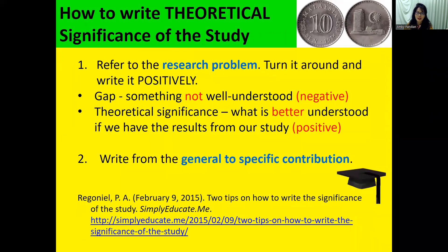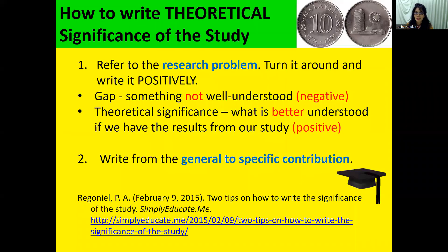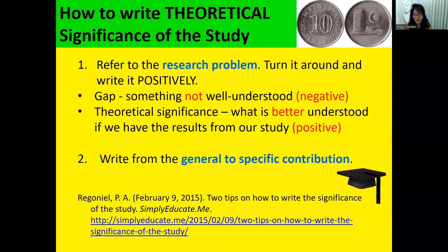When writing theoretical significance of the study, you refer to the research problem — here, the topic is the concept ruang. Then you turn it around and write it positively. The gap is something not well understood; theoretical significance is what is better understood once you have results from your study. Like all writing, it should move from general to specific — you start generally on the research problem, then move to specific.